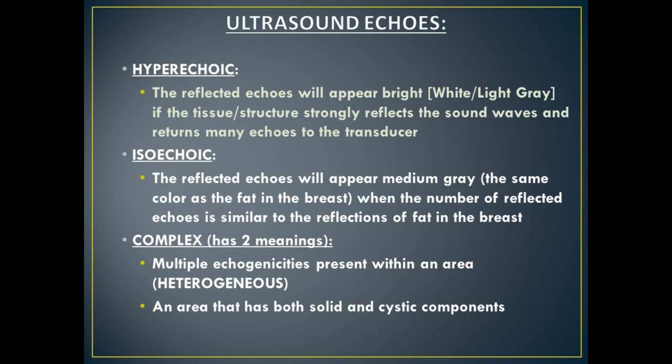Then we have another category called complex, which has two meanings in breast imaging. One meaning is that an area is filled with both cystic and solid components — part of the mass may be solid tissue and the rest fluid. Complex can also mean there are multiple different types of echoes inside an area — a mass that is hypoechoic, hyperechoic, and anechoic all at once, with a whole range of different echogenicities present.